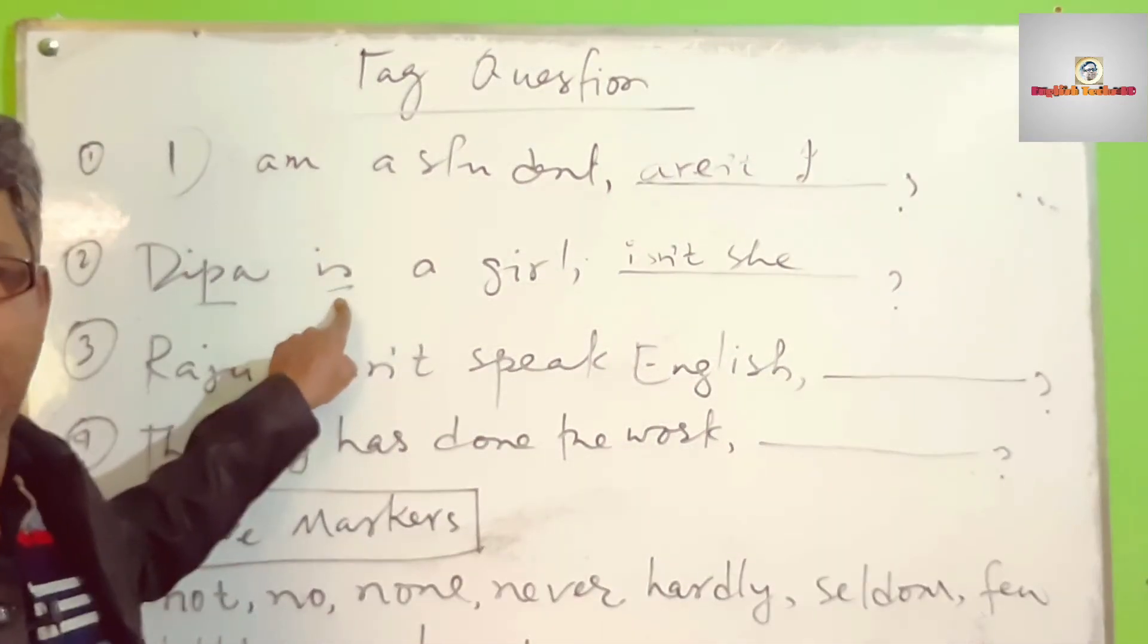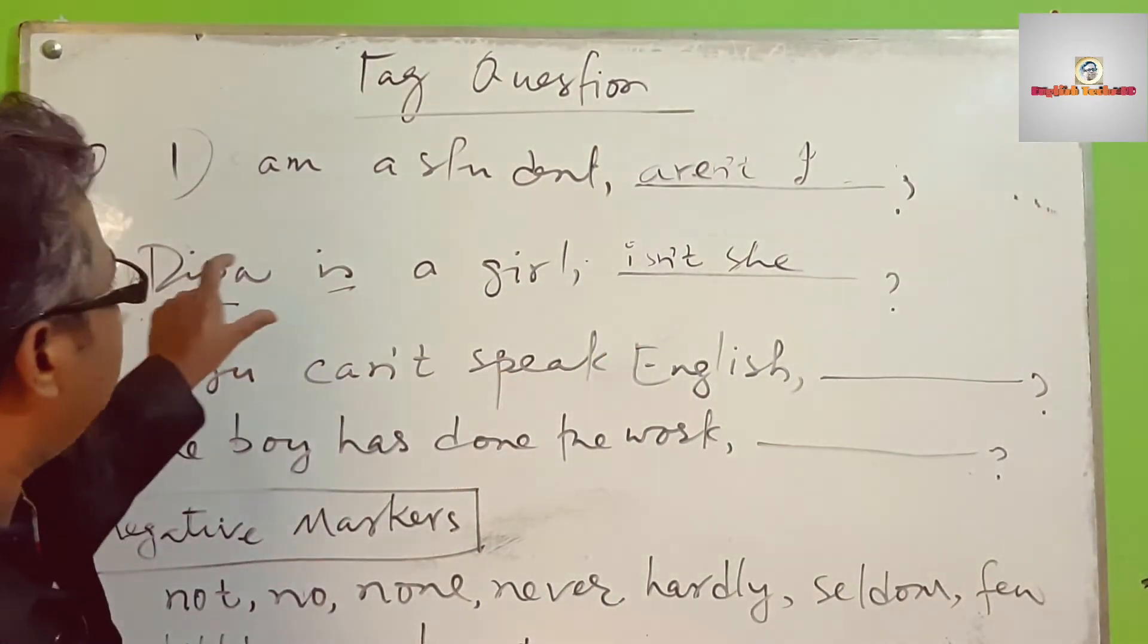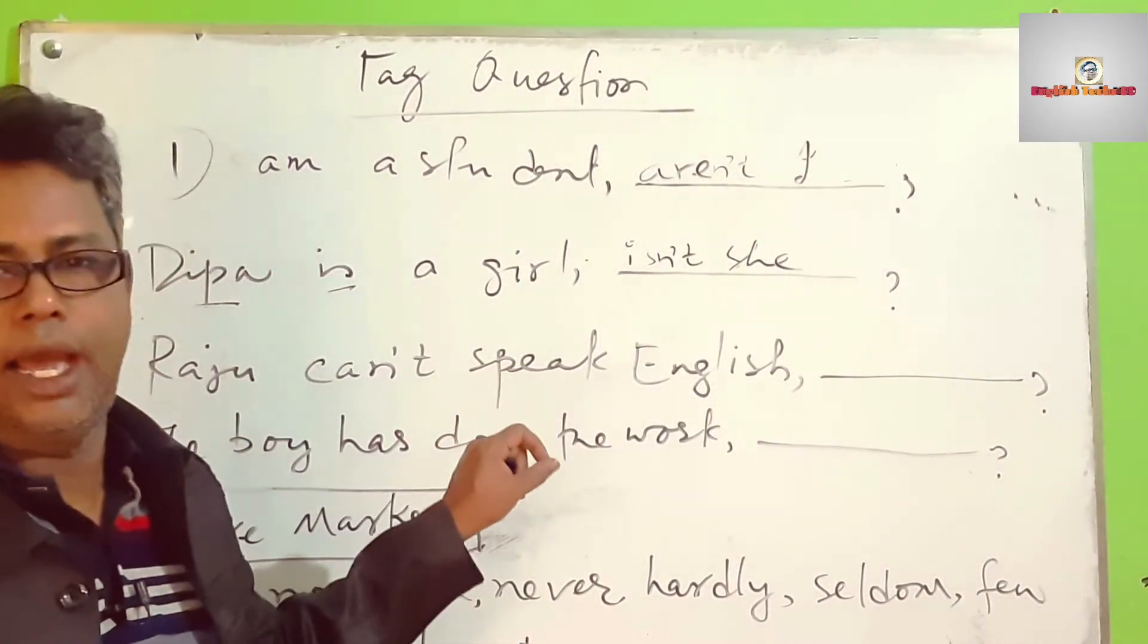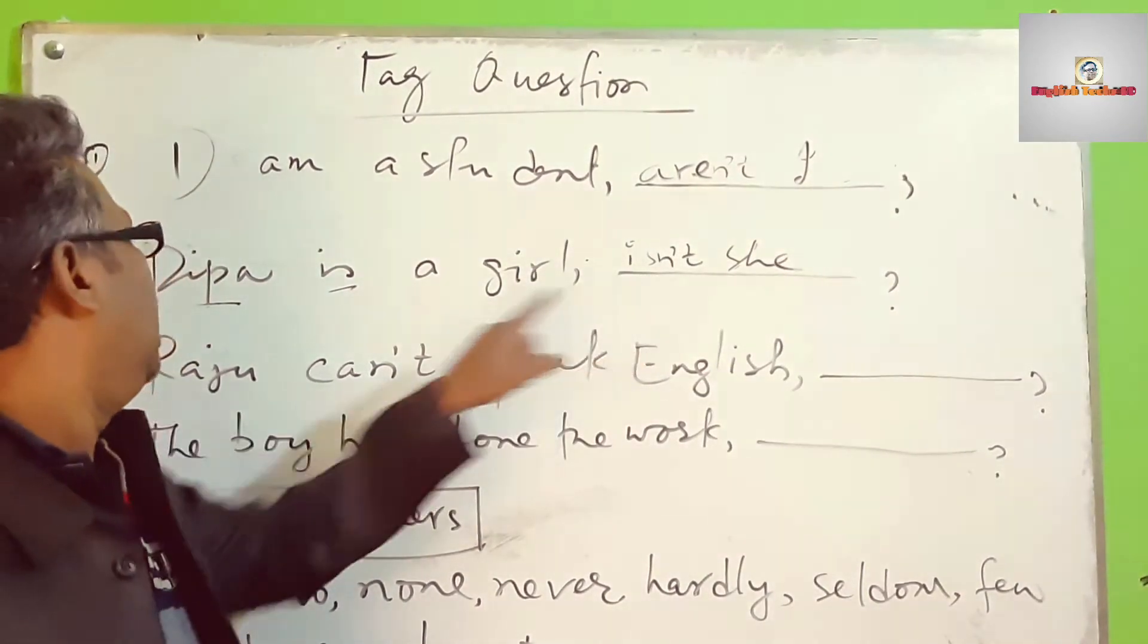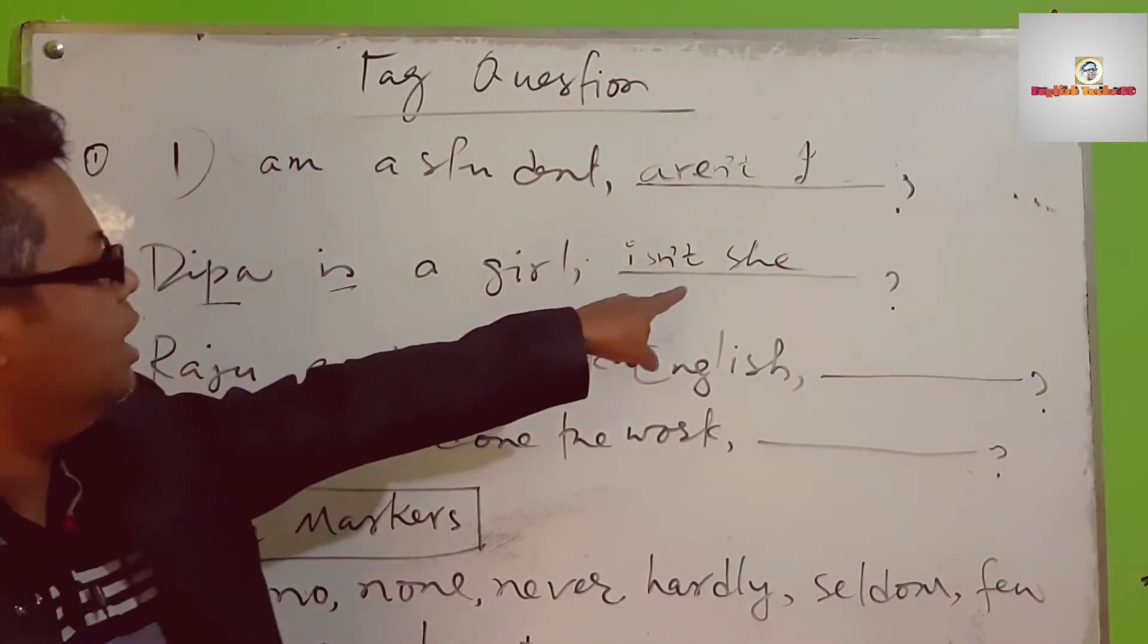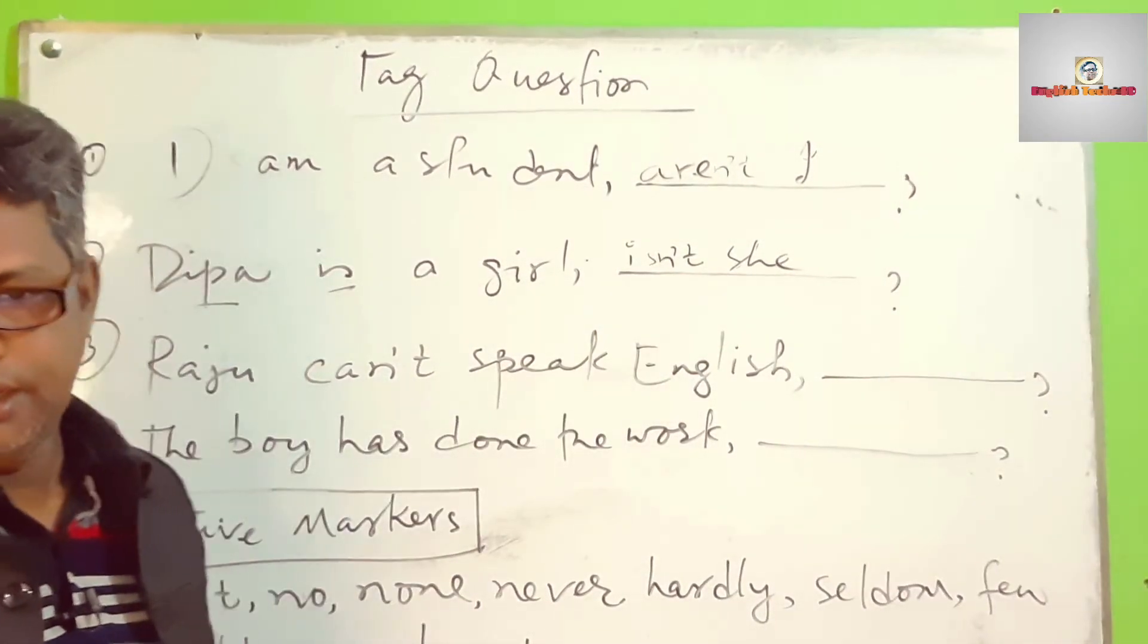Auxiliary verb - if there's a negative marker, if 'not' is there, then the tag will be positive with the subject. This is the first step.